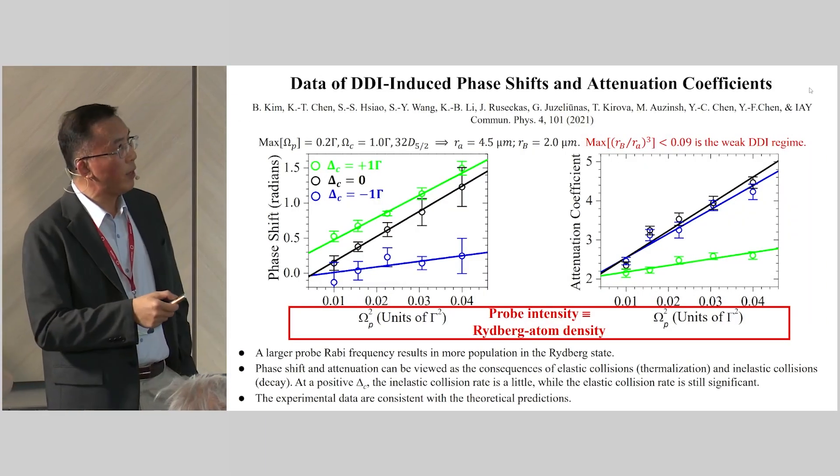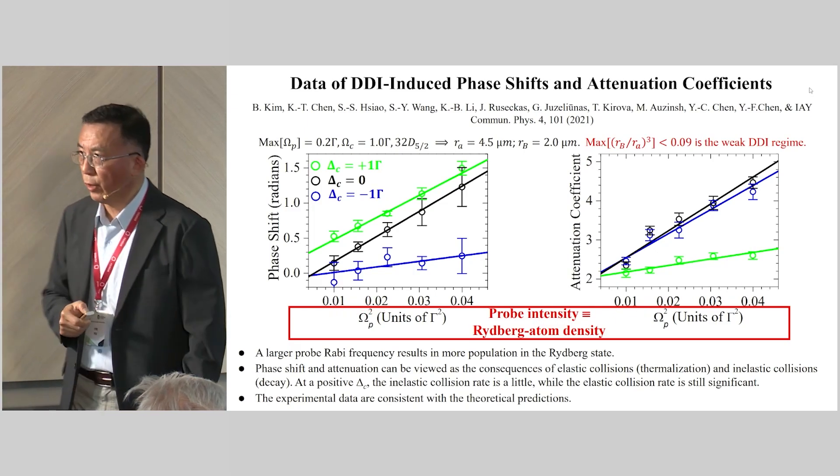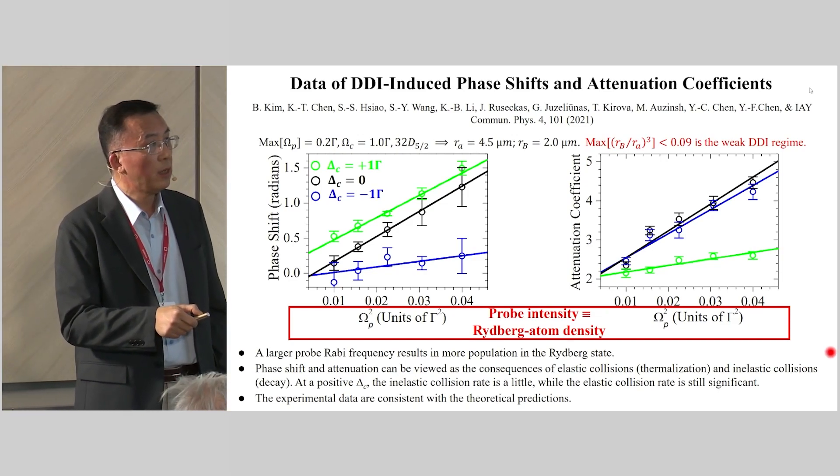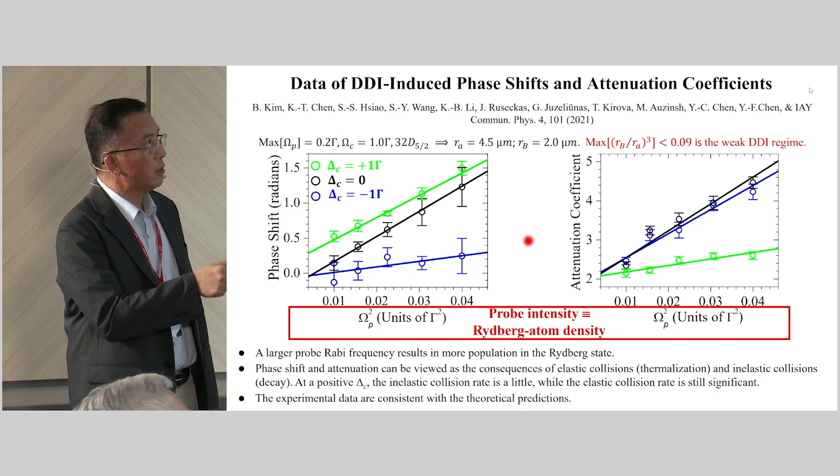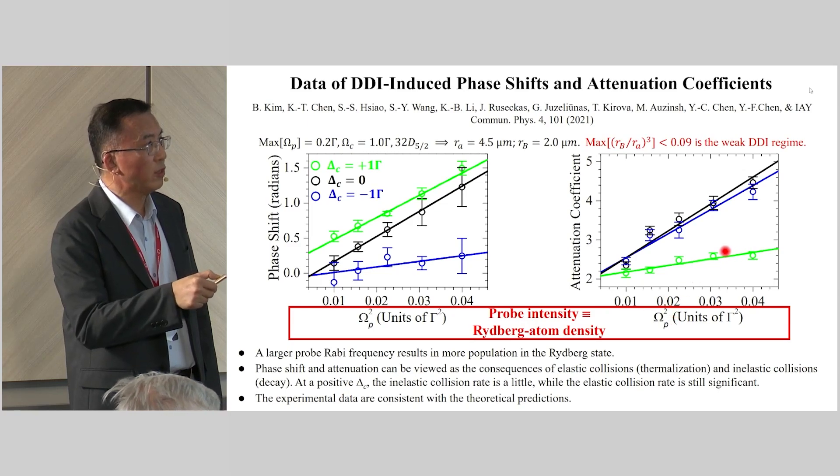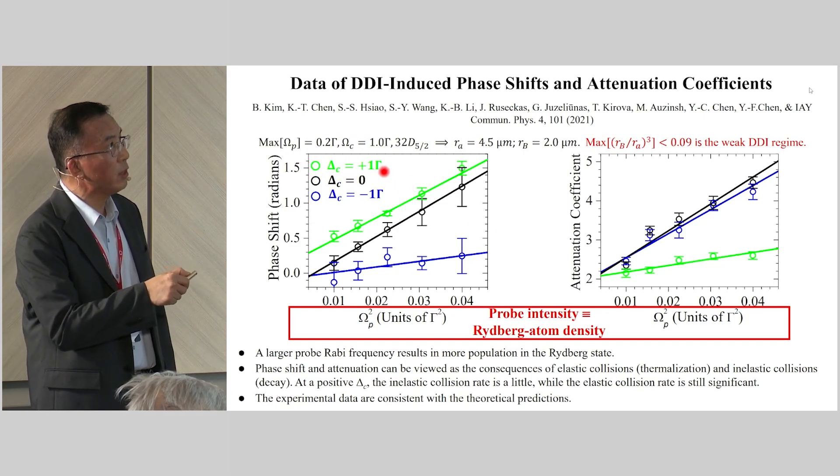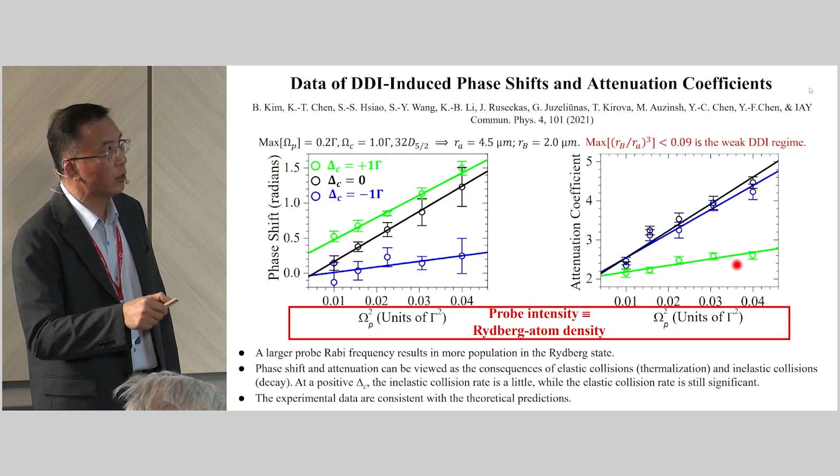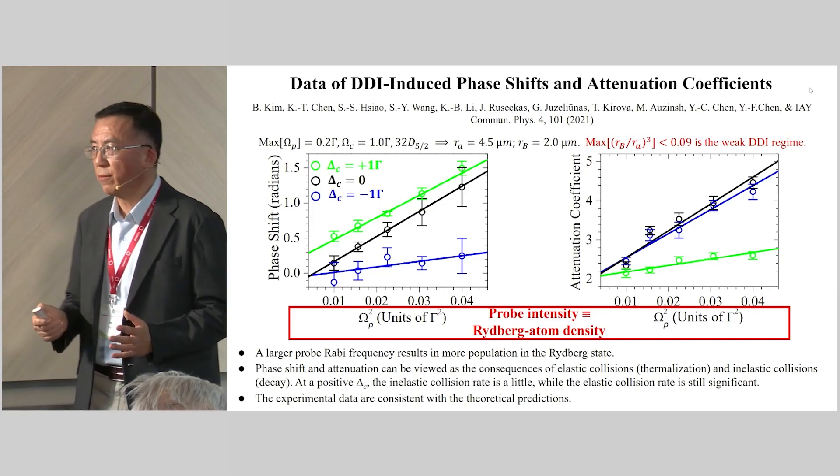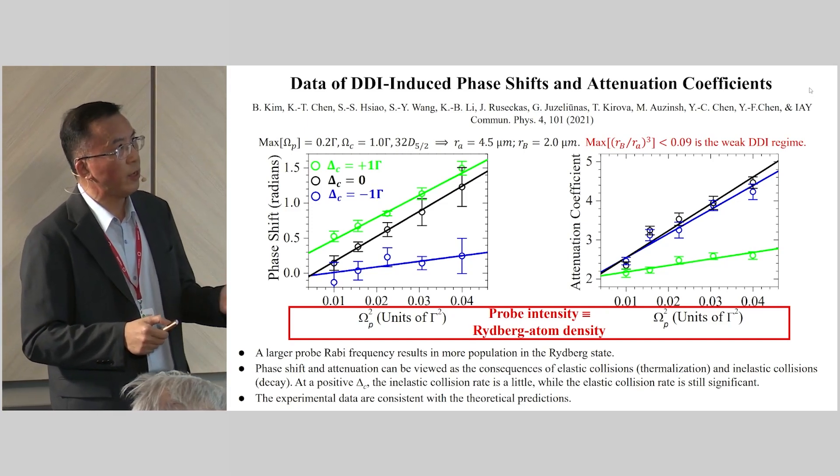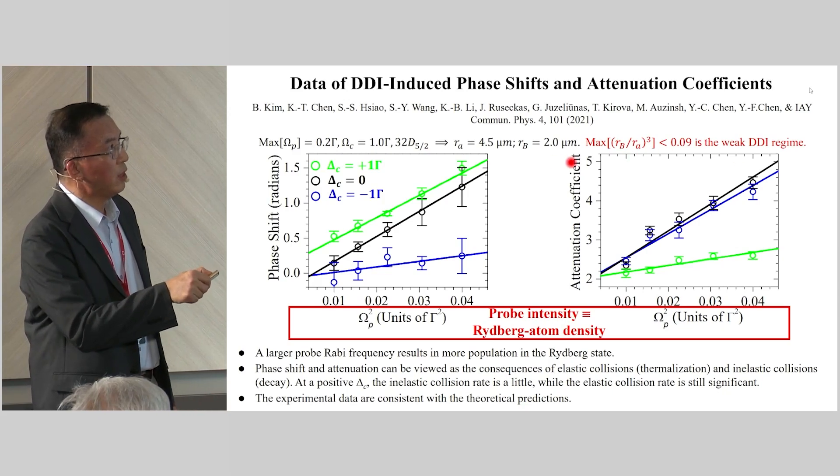We measure the phase shift and attenuation coefficient as a function of probe Rabi frequency squared or probe intensity. Higher probe intensity indicates larger Rydberg atom density or stronger dipole-dipole interaction. We measure the phase shift with different detuning, also attenuation with different detuning, and they are as expected. It's interesting to know, with a positive detuning, you can have a larger phase shift but almost no attenuation. For negative detuning, you have a small phase shift but large attenuation. In view of collision, phase shift is the consequence of elastic collision, and loss attenuation is a consequence of inelastic collision. Elastic collision can help thermalization, which is good. So it's better to choose the positive detuning.